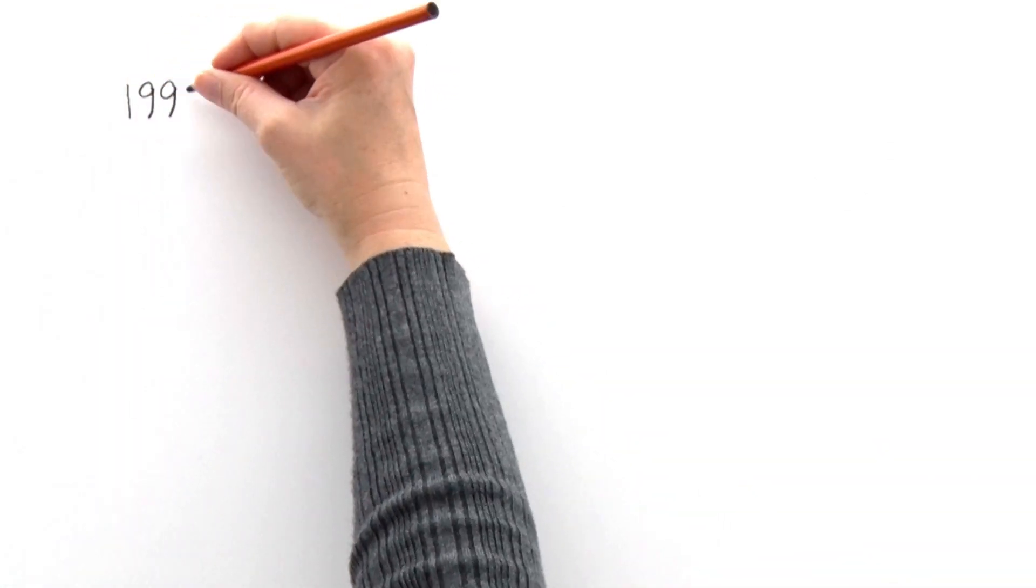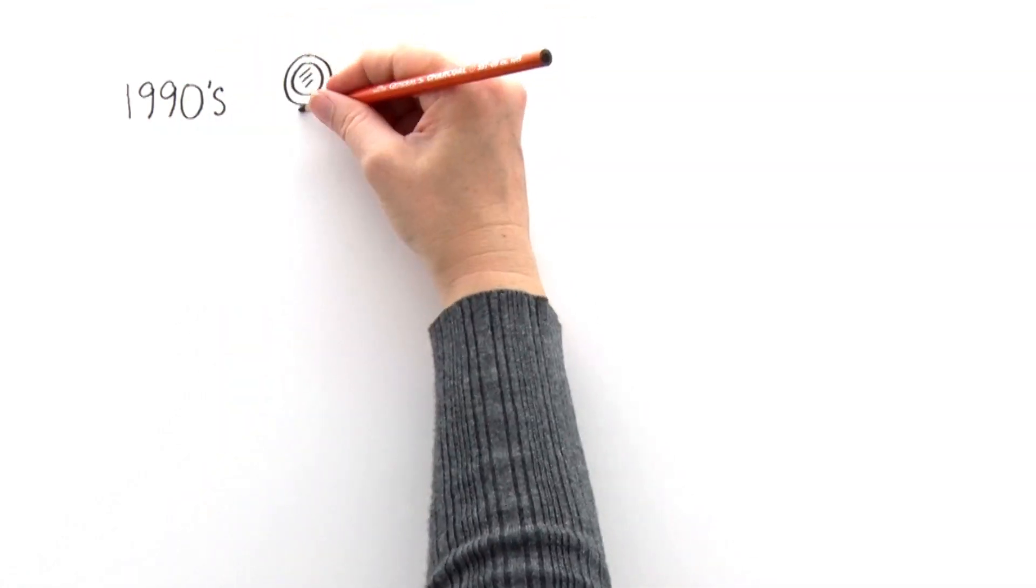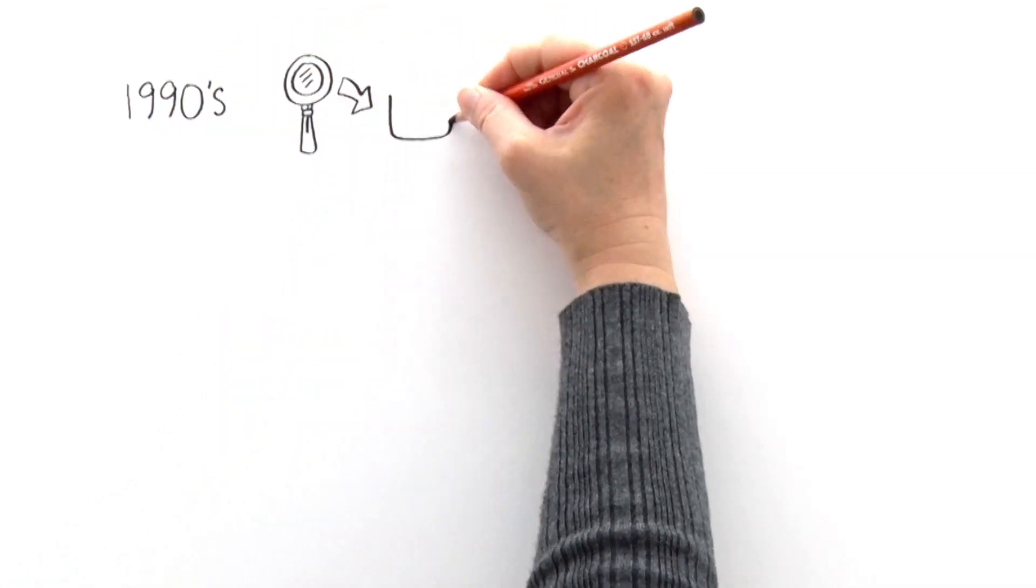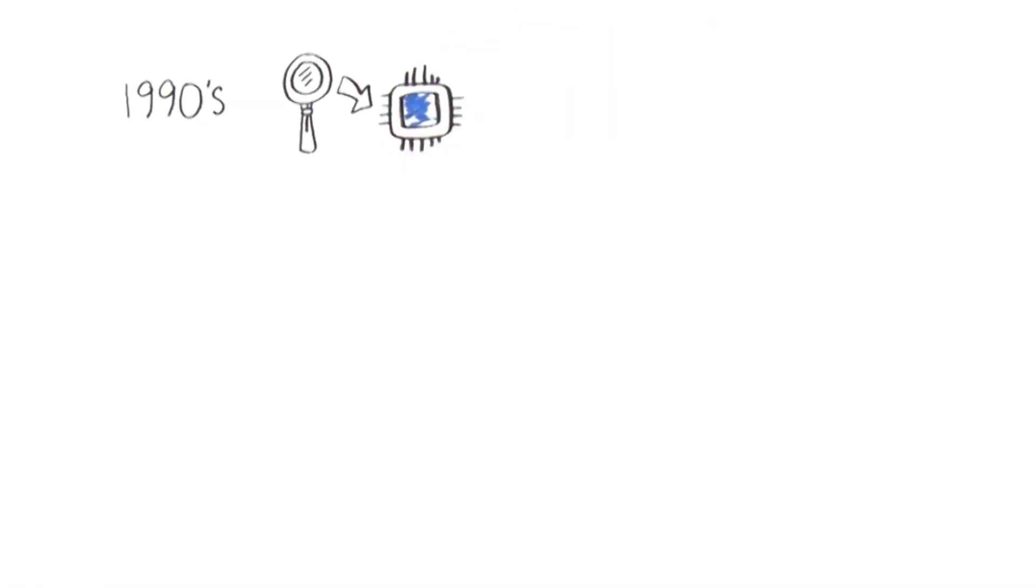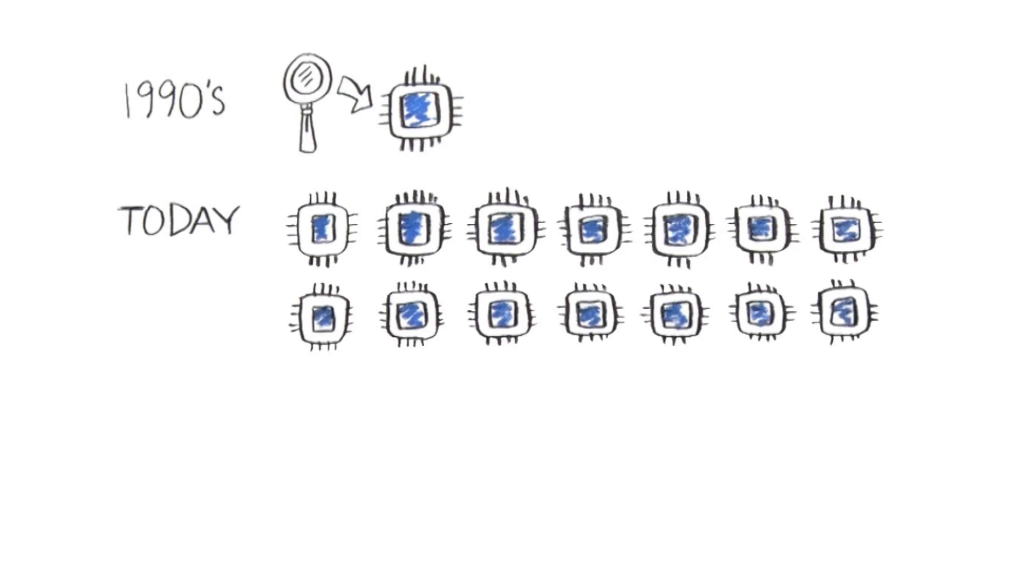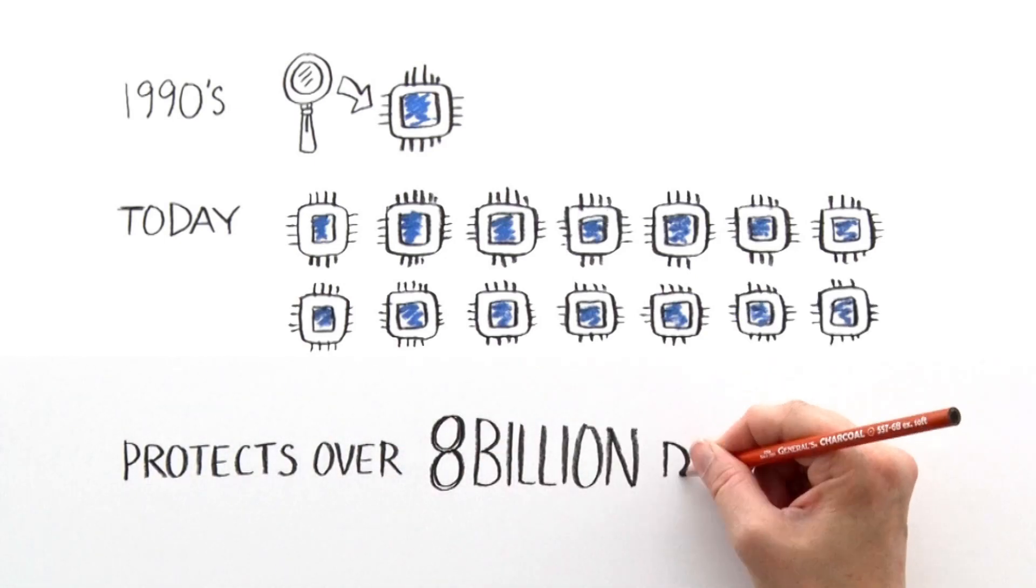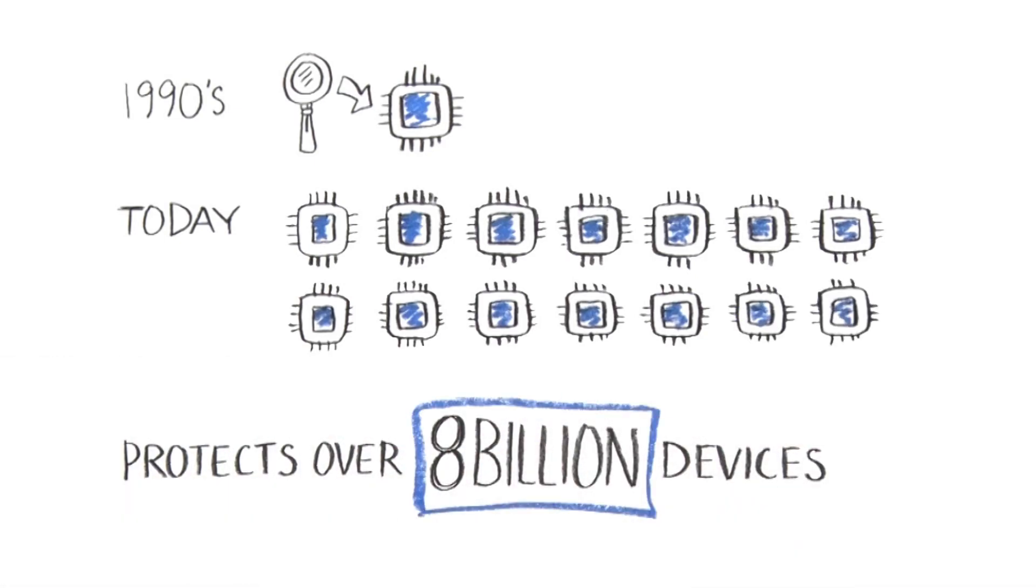This form of attack was discovered by researchers at Cryptography Research in the 1990s, and we have developed effective countermeasures to help guard against DPA attacks. Today we are a leader in semiconductor security, protecting hundreds of billions of dollars in commerce every year with our technologies.